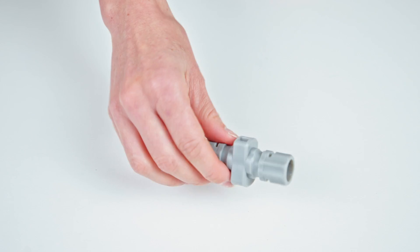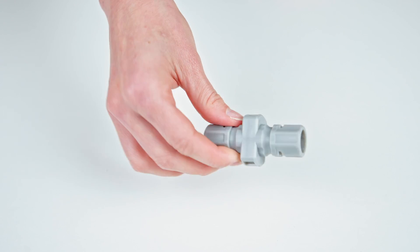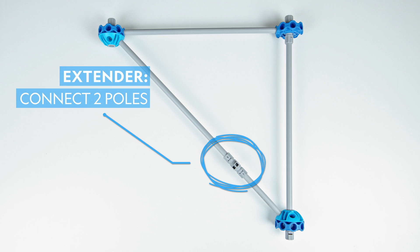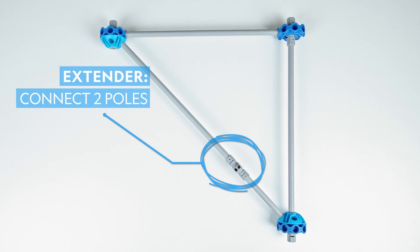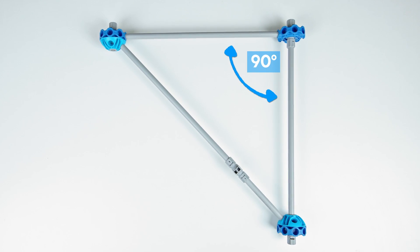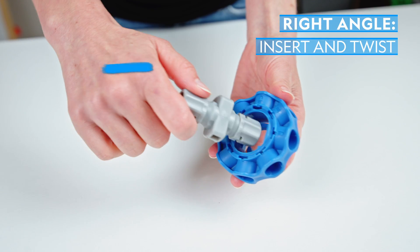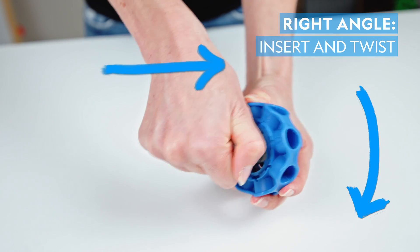The extender piece is the most important piece of your kit. It can connect two poles to make the long edge of your triangle. It also connects with the hub piece to make right angles. Simply insert and twist to lock into place.